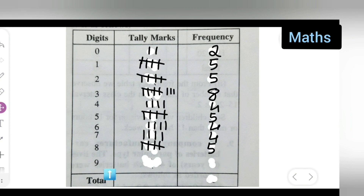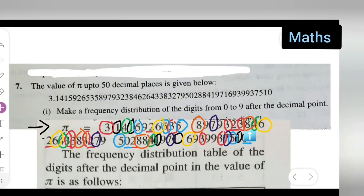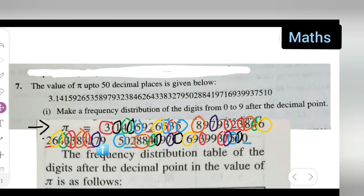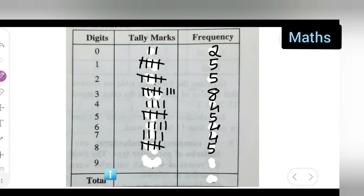Now, how many times does 9 occur? Let me count carefully: one, two, three, four, five, six, seven — let me check again — eight. The digit 9 occurs a total of eight times. Write down one, two, three, four, five, six, seven, eight — so frequency is eight.